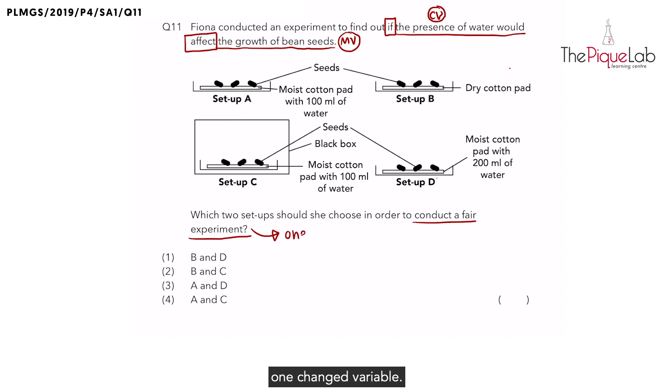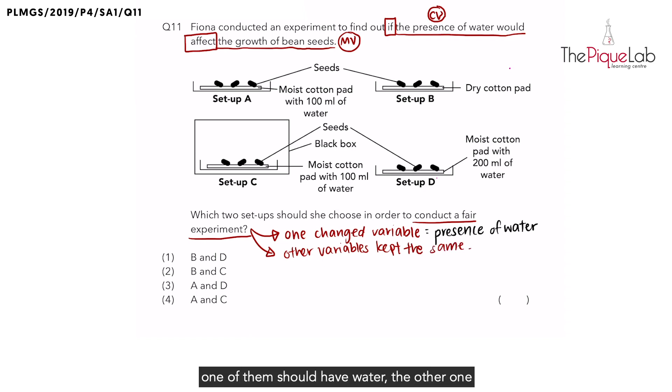So in this case, what is the one change variable that we have? As indicated earlier, the one change variable is only the presence of water. Now what about the other variables in the experiment? They must be kept the same. So between my two setups, one of them should have water, the other one should have no water. And then I need to ensure that all the other variables are kept the same as well.